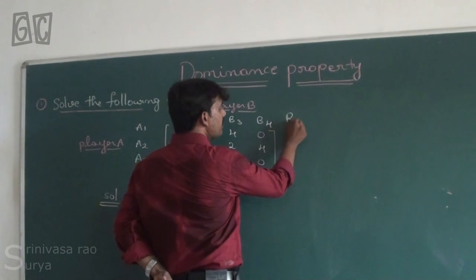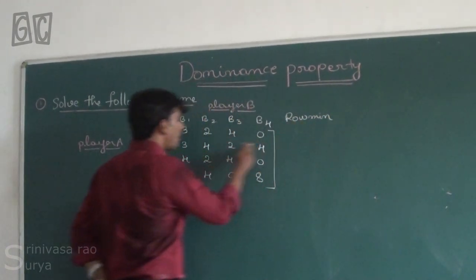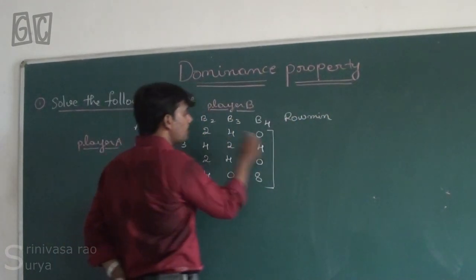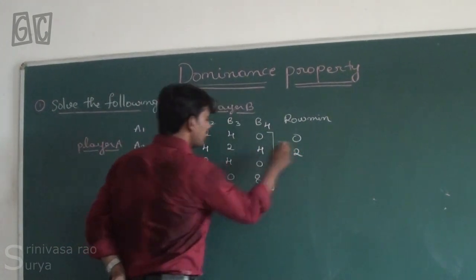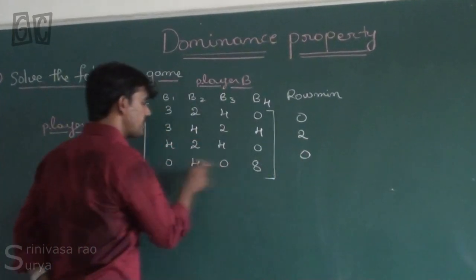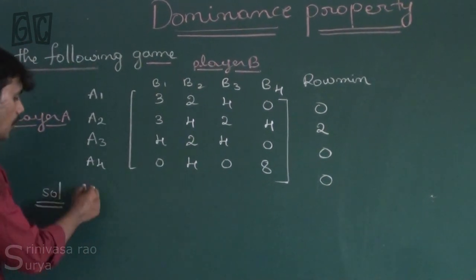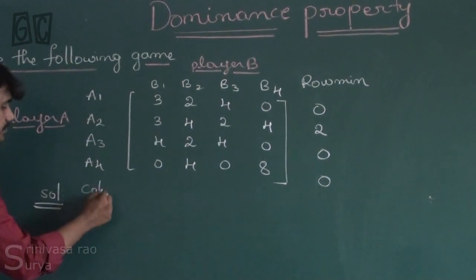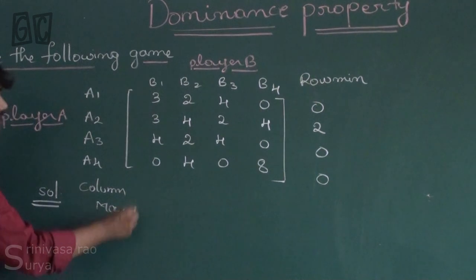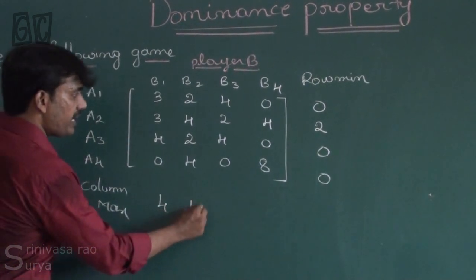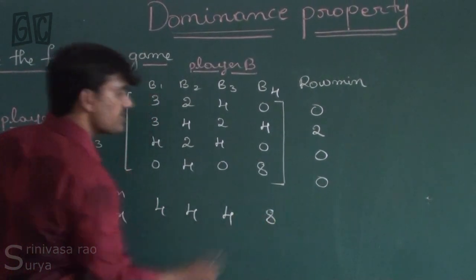First we have to find the row minimum. The row minimums are: 0, 2, 0, and 0. After that, the column maximum: the column maximums are 4, 4, and 8.